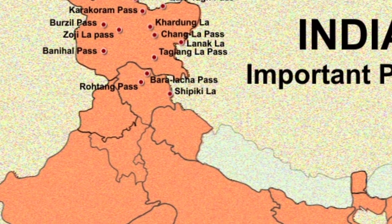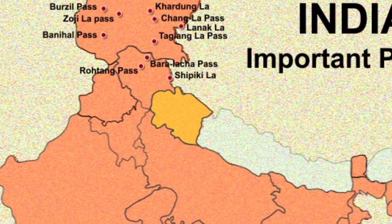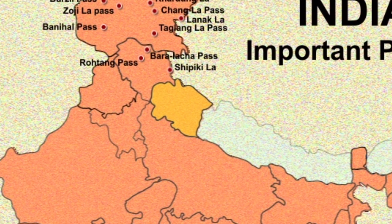Then we come to Uttarakhand. Here the first one is Mana Pass. It is a mountain pass in the Himalayas on the border between India and Tibet. It is one of the highest vehicle-accessible passes in the world.